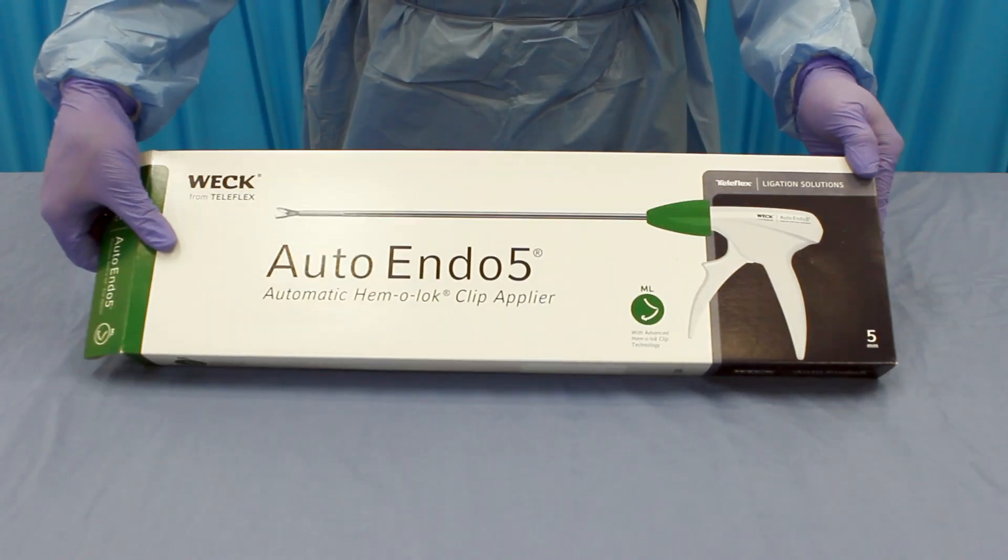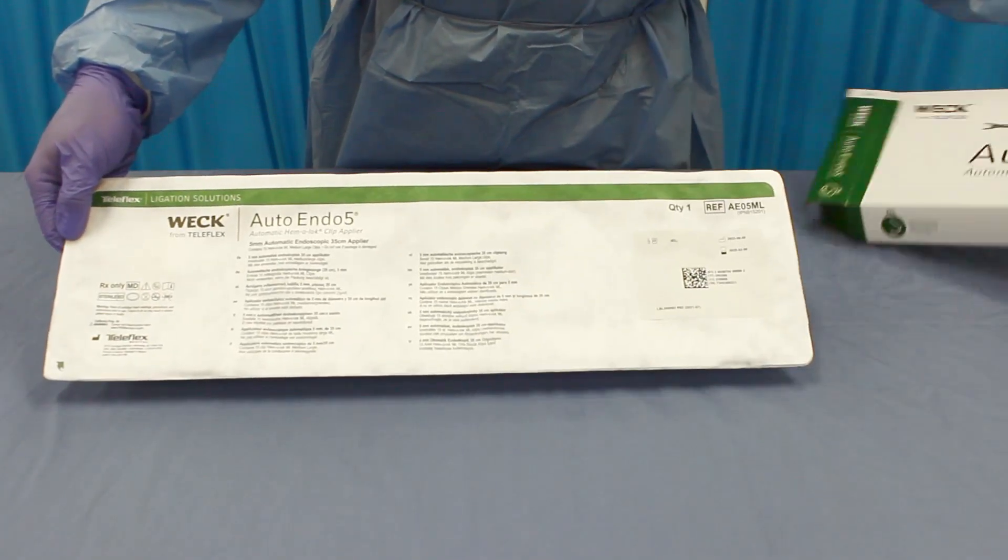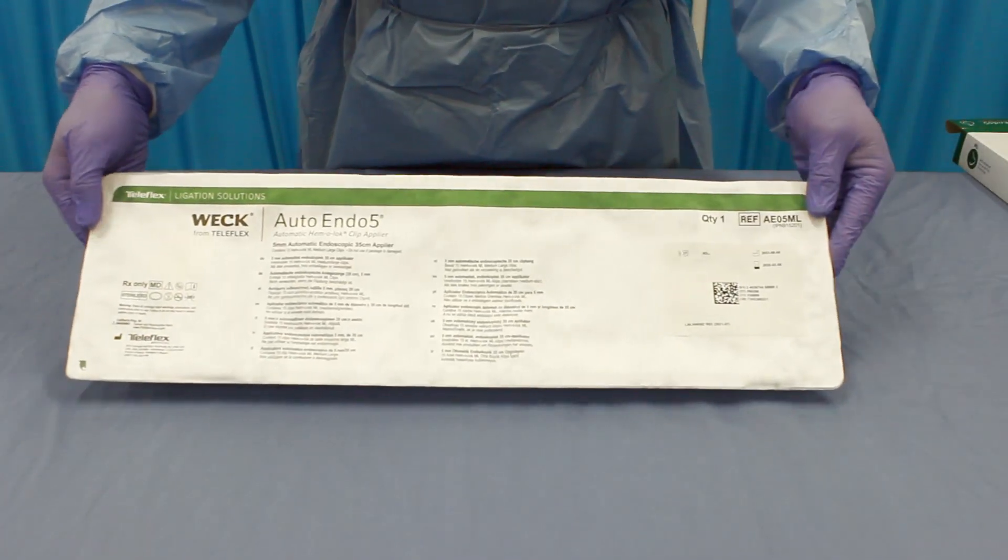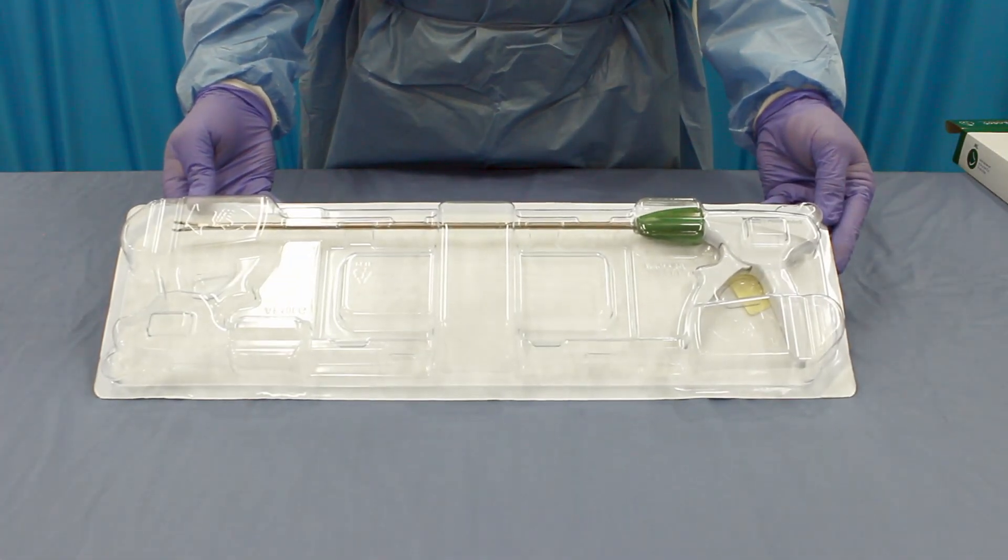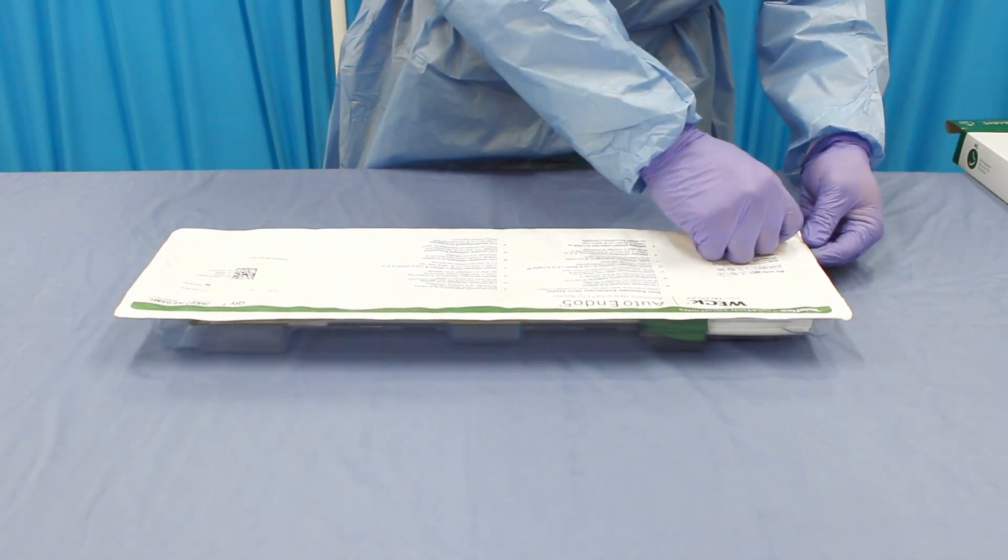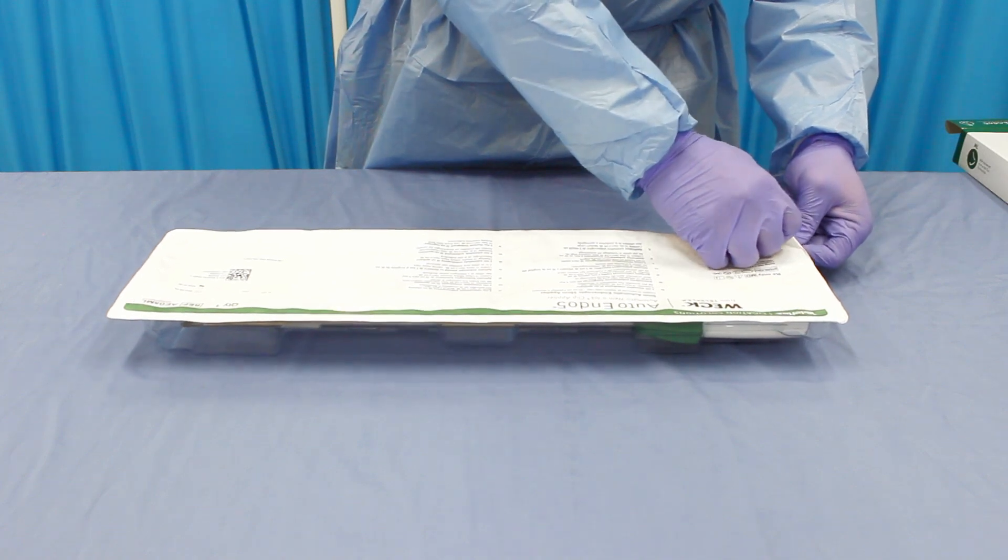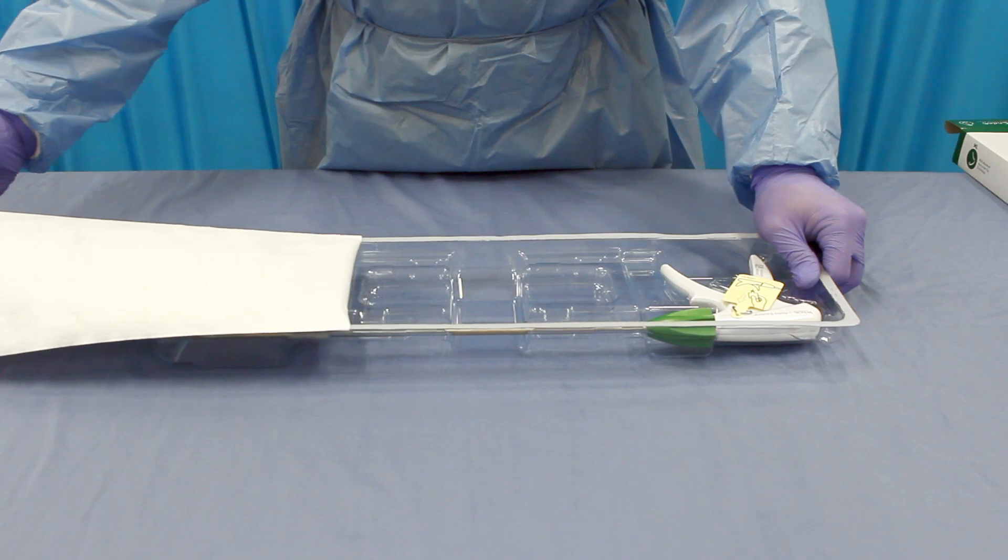The Weck Auto Endo 5 Automatic Hemolock Clip Applier provides ligation confidence and security in an automated delivery platform that is designed for procedural convenience and flexibility. It comes packaged in a Tyvex sealed tray and is indicated for single use. The 35 cm shaft contains 15 medium-large Hemolock Clips. The applier's extended length enhances reach and procedural flexibility.